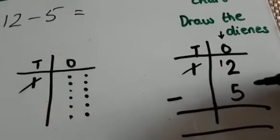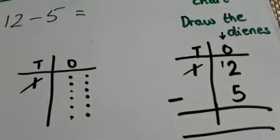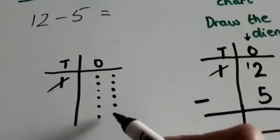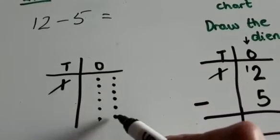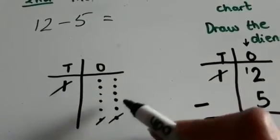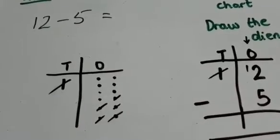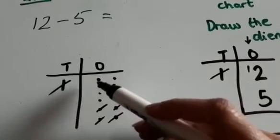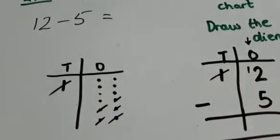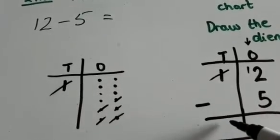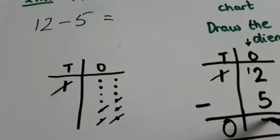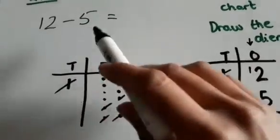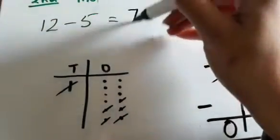Now can I take away 5 ones from 12? Yes I can. So now what I'm going to do is I am going to cross out 5 ones: 1, 2, 3, 4, 5. Now let's see what's remaining: 1, 2, 3, 4, 5, 6, 7 ones. So we have got 0 tens and 7 ones. So 12 minus 5 equals 7.